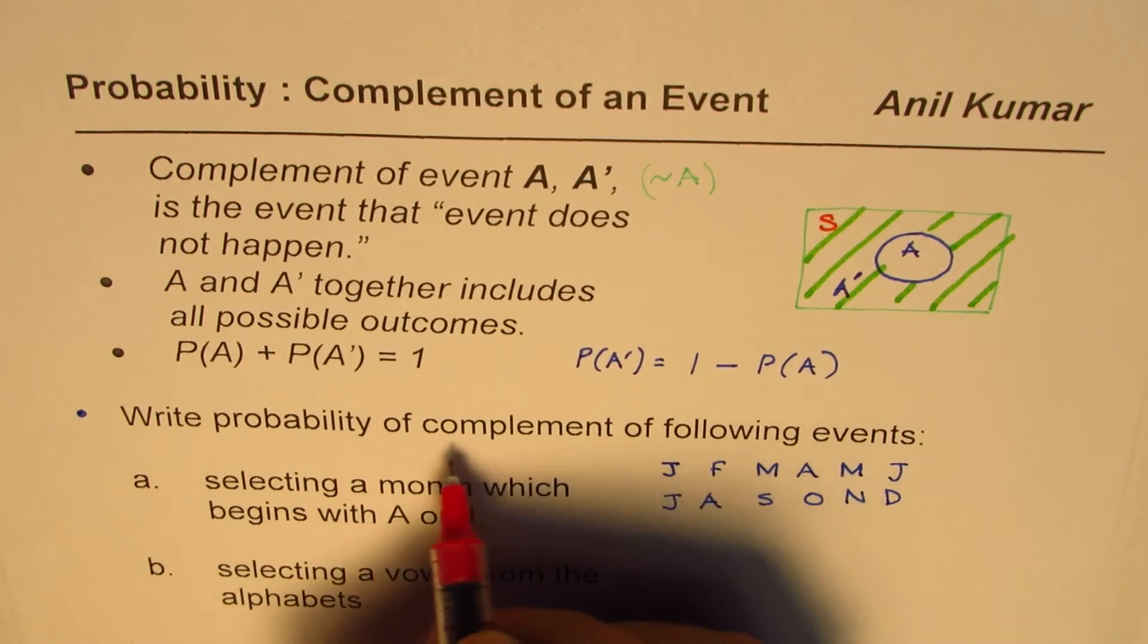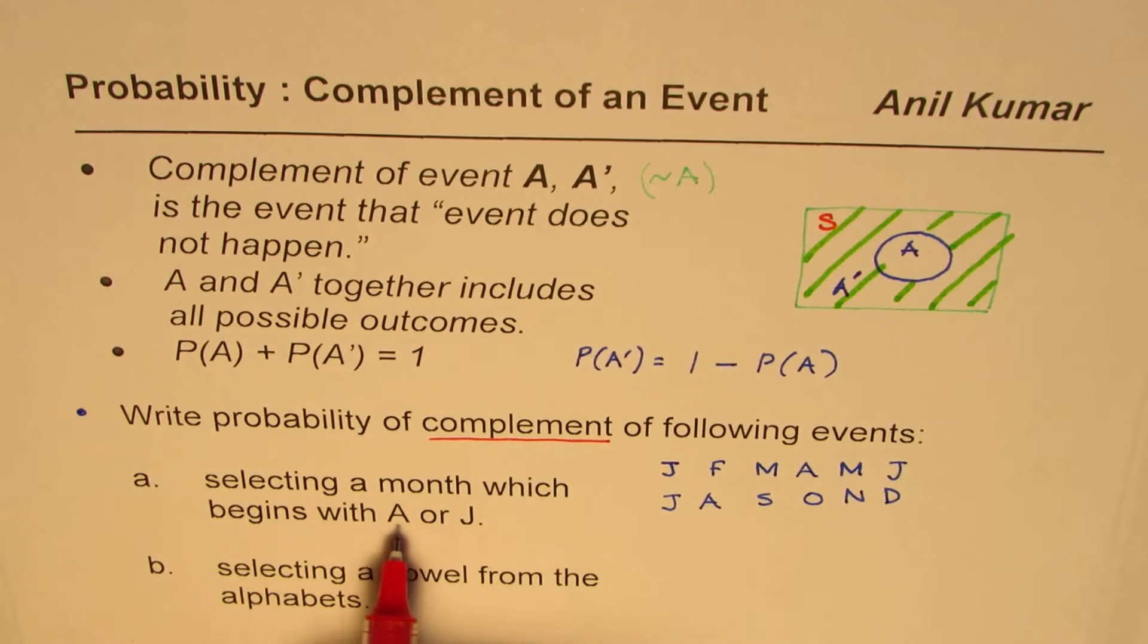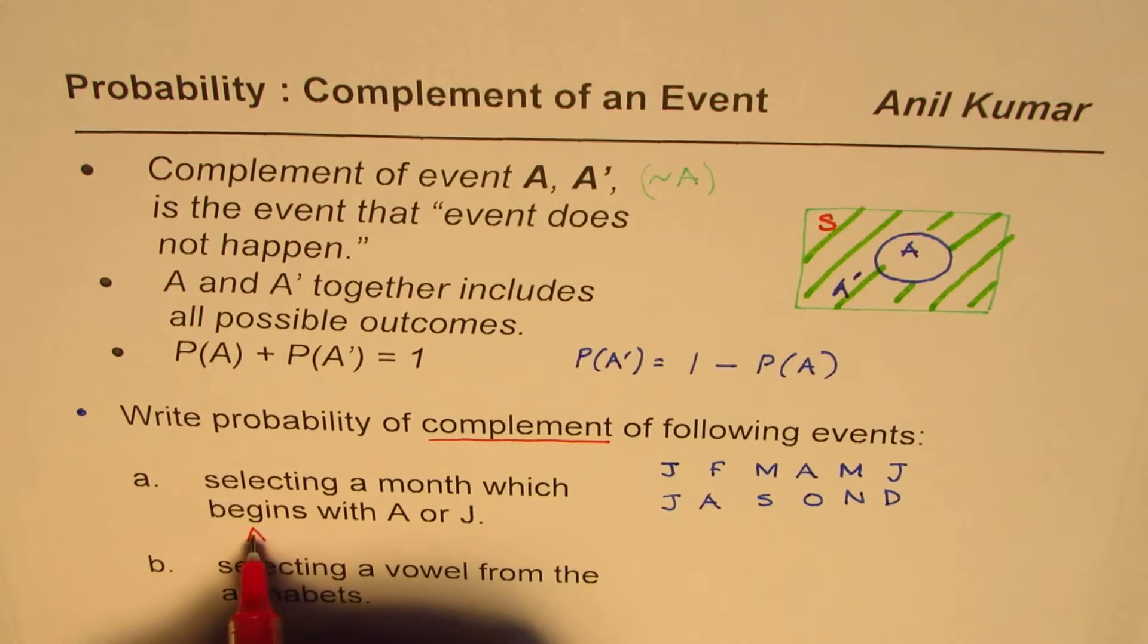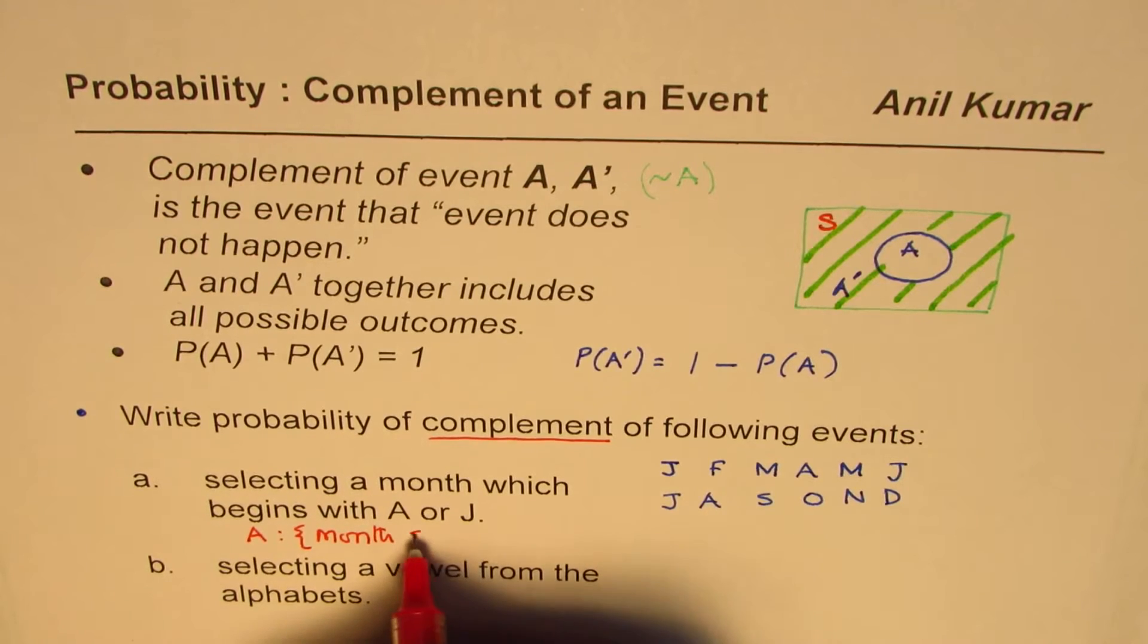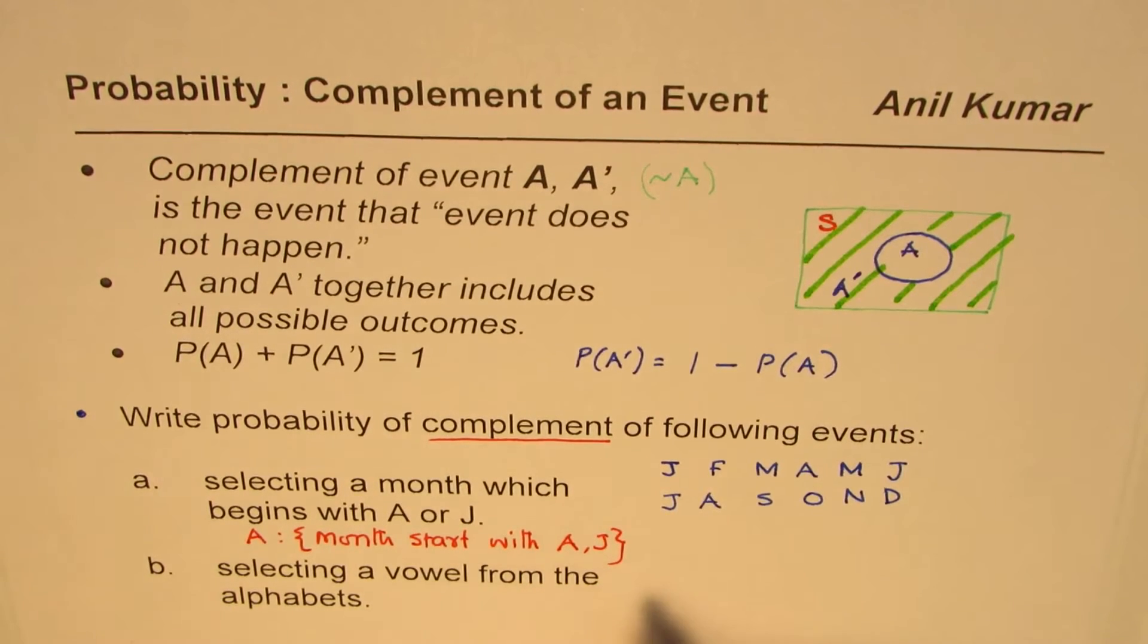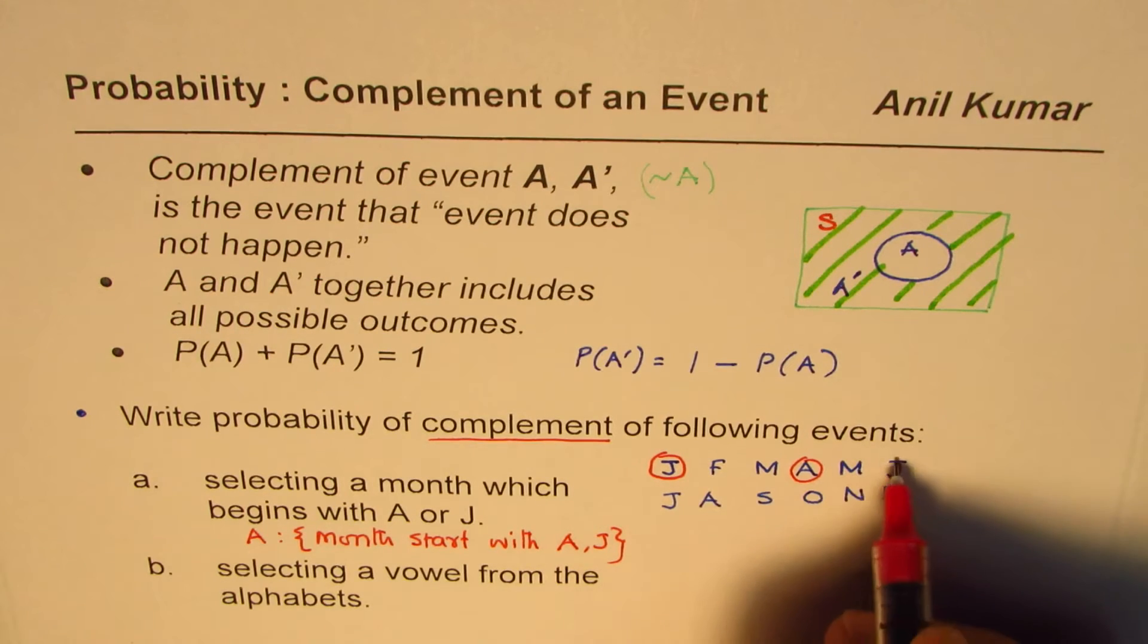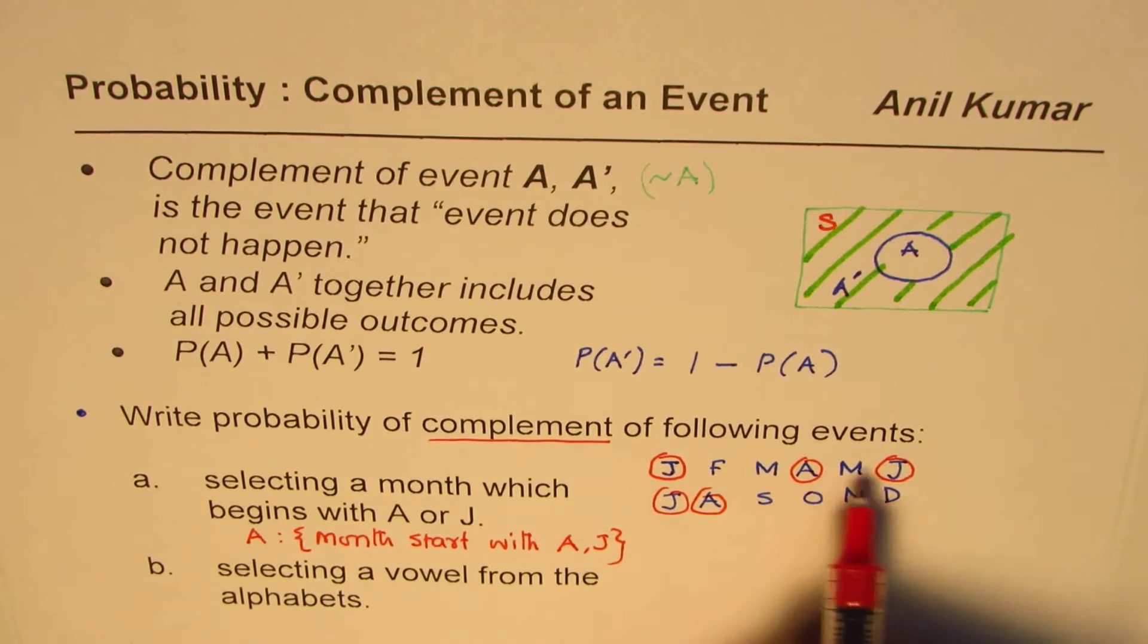Now if I want to say probability of complement of these, so probability of months which start with A or J, complement of this. So let us say event A is month start with A or J, union of these two. So we can circle these months. So these are the months, months which start with A or J. These are the months, one, two, three, four, five.